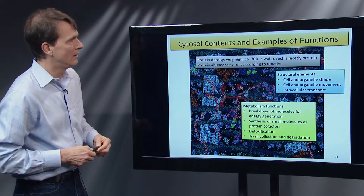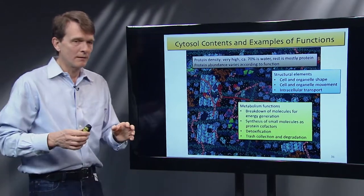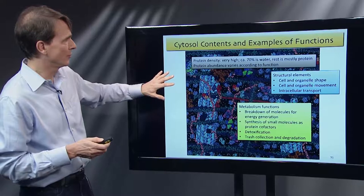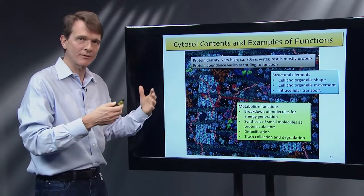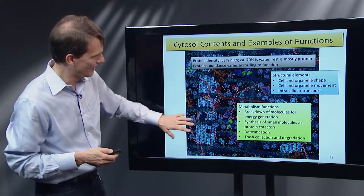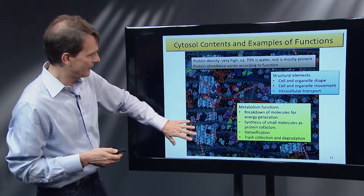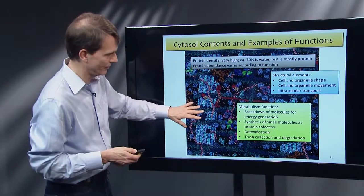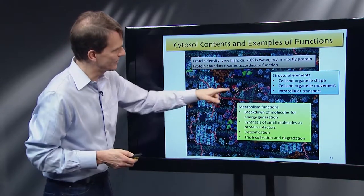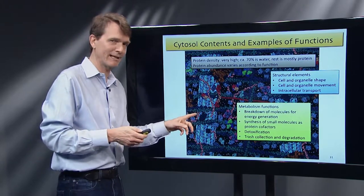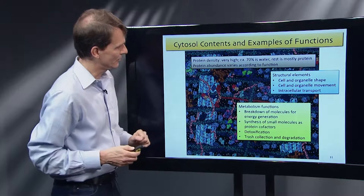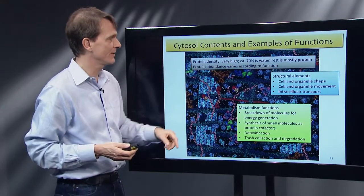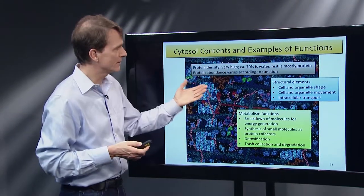Each one of these blobs is a particular protein — there's a whole bunch of them put together. The atomic structure of these proteins is actually correct; the artist took a whole bunch of atomic structures and put them together to convey the density, which is quite high. Only about 70% of your cell is water, allowing for diffusion. The rest is mostly protein.